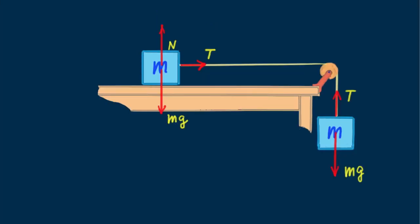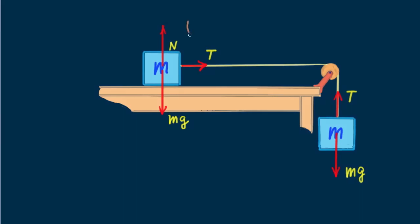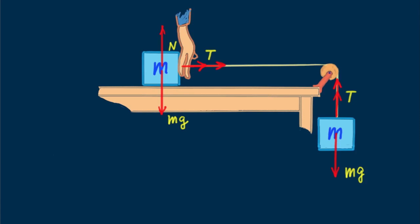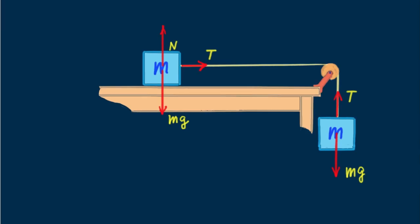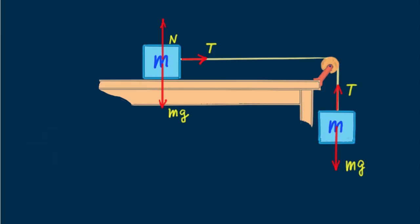What is interesting in this problem is that the weight of one block accelerates the masses of two blocks. And the tension in the string connecting the blocks is not the weight of either block, but half the weight of either one. What if you held the sliding block stationary so there was no motion? Then the string tension would equal mg. But if you release your grip and let the blocks accelerate, this tension decreases as we've just seen.